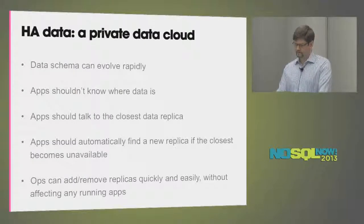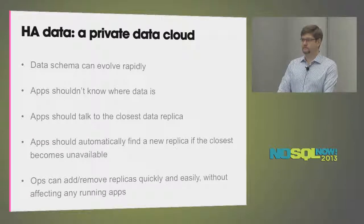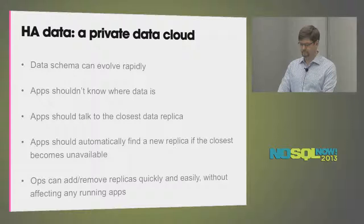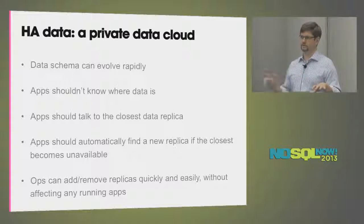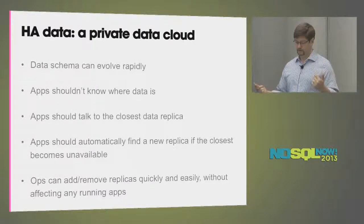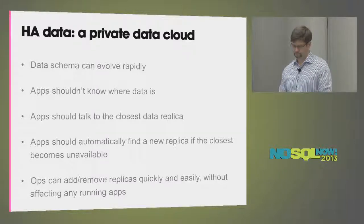And seamless scale-out — all NoSQL products are big on this, being able to continue to add servers as scale grows. In essence, what we were looking for was a private data cloud where we can evolve the schema, where developers don't have to worry about calling different places to get data. It fails over and talks to the closest thing. If you've got Raven instances in multiple data centers, you don't want apps going across the country with a 150-millisecond round trip. But if all Raven instances in one data center go down, you want the option to go across the country — slow is better than nothing.